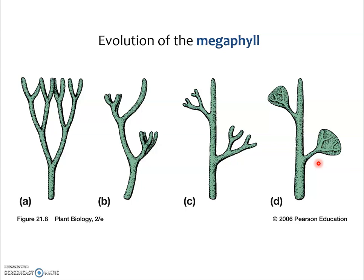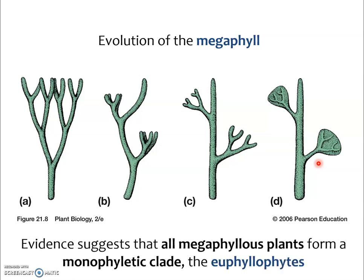The megaphyll is not an elaboration of the microphyll — the megaphyll did not evolve from the microphyll. The megaphyll evolved from a branch system. This is based on developmental information, fossil information, and a variety of pieces of data. All of that data suggests a single origin for all plants with megaphylls, meaning they are a monophyletic group. If we want to be jargony, we can call them the euphyllophytes — the true-leaved plants.